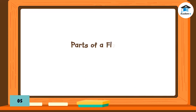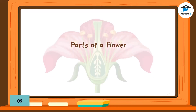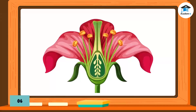Parts of a flower: Many flowers are hermaphrodites — they contain both male (stamen) and female (pistil) parts in the same flower. These flowers are also called perfect flowers.